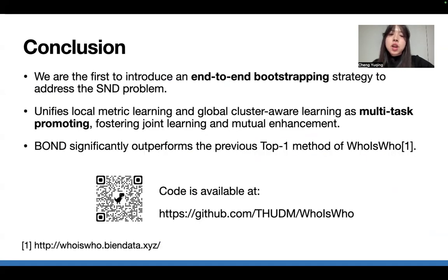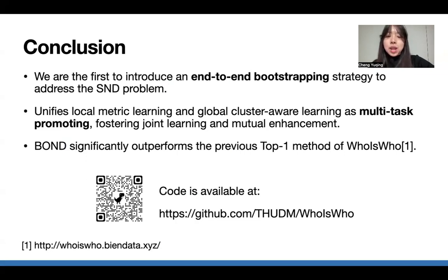Here are the three main contributions of BOND. First, we have developed the first-ever end-to-end bootstrapping method that tackles both paper similarity learning and paper clustering in one go. By unifying these together under our multitask prompting framework, we have enabled these components not just to coexist but to enhance each other. Even without ensemble methods and post-processing, BOND has managed to outperform the top method in the Who Is Who benchmark. Our code is available online — we invite you to explore, experiment, and even contribute to the ongoing development of BOND. Thank you for watching!